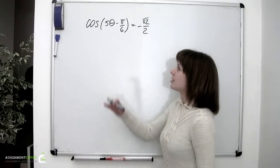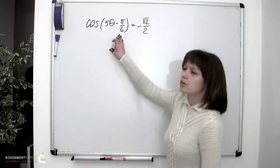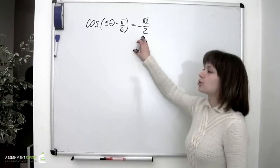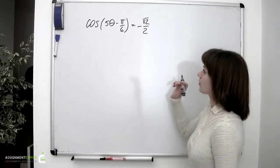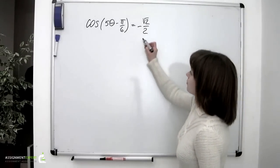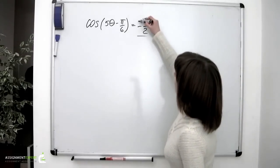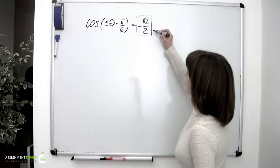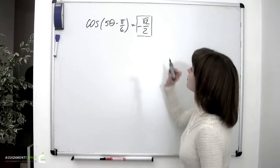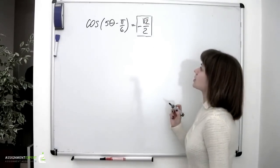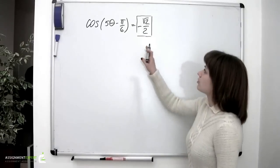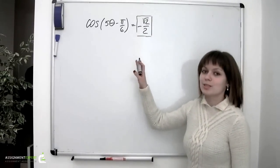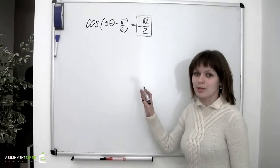We have cosine of 5 theta minus pi over 6 equals negative square root of 2 over 2. First of all, let's look at the term on the right side of the equation. Obviously, its absolute value is less than 1, which means that we can get straight to solving this equation.